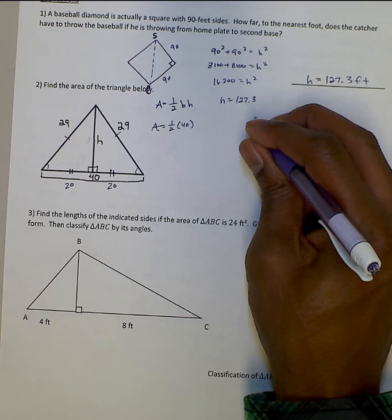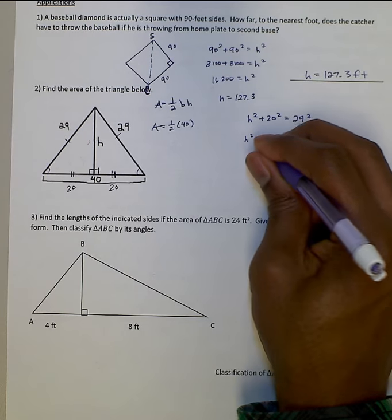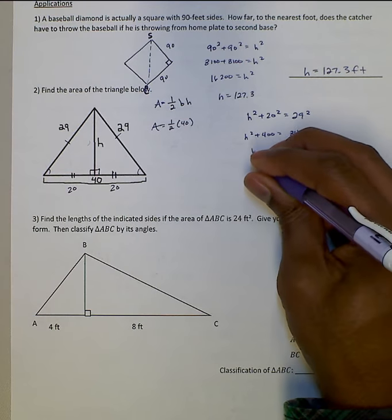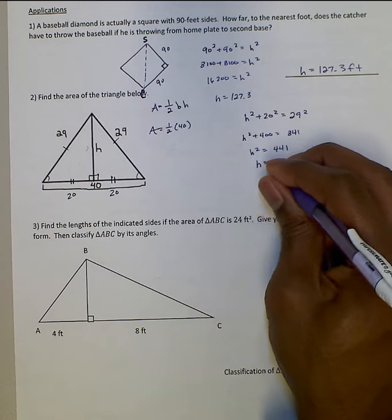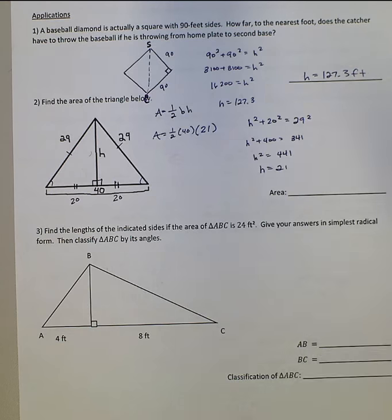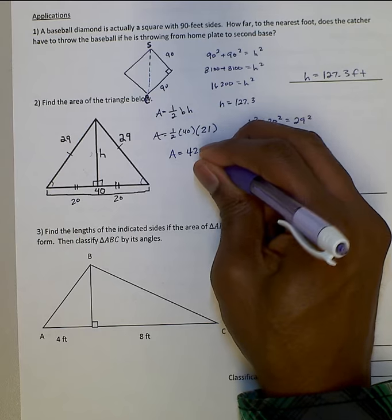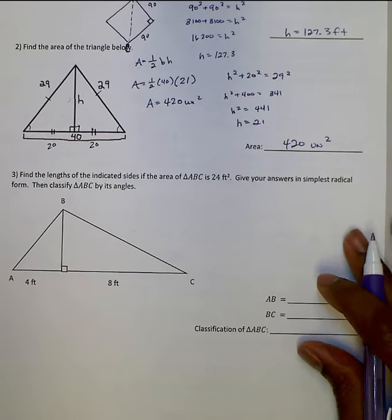Now we can use that along with Pythagorean's Theorem to find out what h is going to be. I know that h squared plus 20 squared should equal 29 squared. H squared plus 400 should equal 841. I'll subtract 400 from both sides, so h squared equals 441. Take the square root of that, and that will be 21. Love it when they come out to be nice whole numbers. So now our height is 21. Now I can plug that back into my equation that we needed at the beginning. One half, 40, which is 20, times 21. Our area would be 420 units squared.